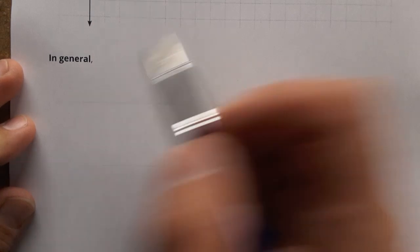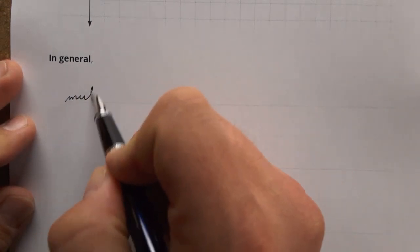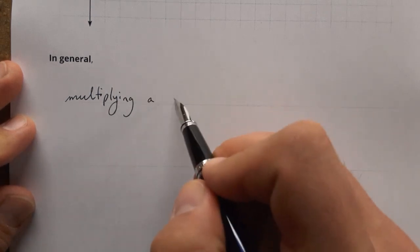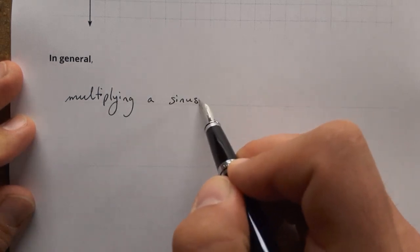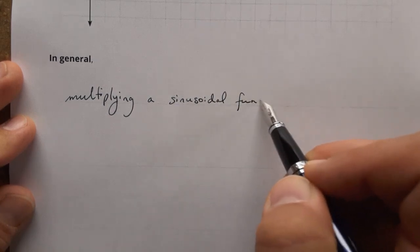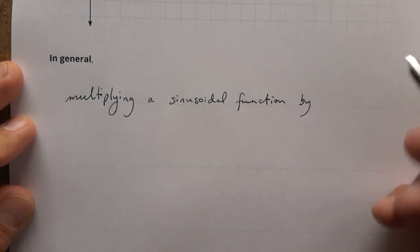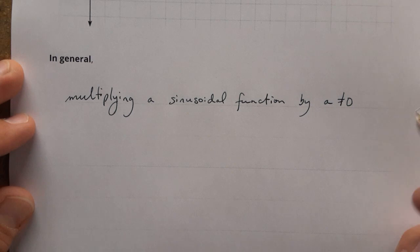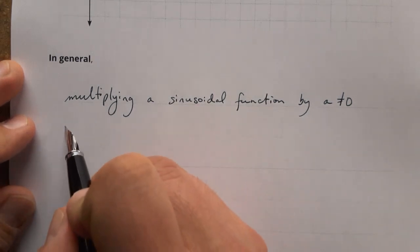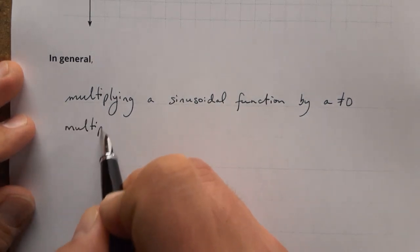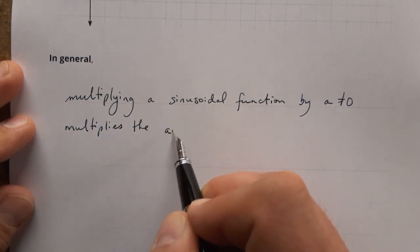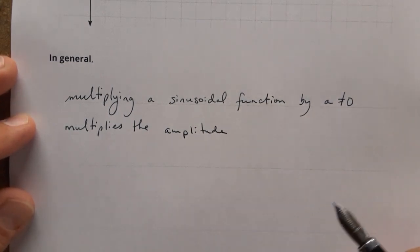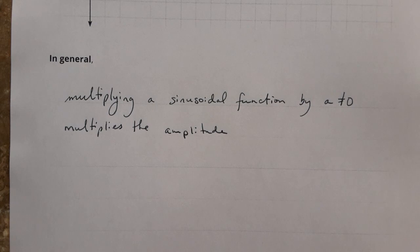So in general we have this idea here. Multiplying a sinusoidal function by some value a that is not equal to zero really just multiplies the amplitude. And I'm going to come back to this and continue this sentence in just a moment. Let's return to our graphs and see how that happens.